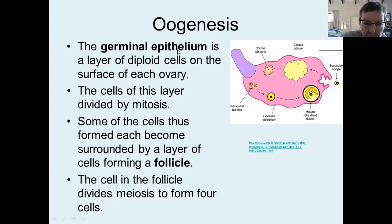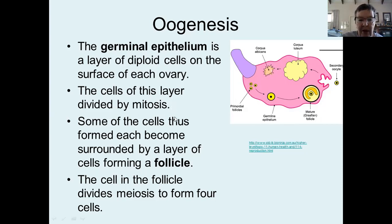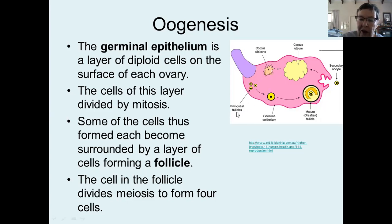Don't call it germline — I'm happy with you calling it germinal epithelium. Those cells are diploid, and the cells of that layer are able to divide by mitosis. Some of the cells thus formed become surrounded by a layer of cells and they form a little follicle. A follicle is a cell in the center that is going to become the egg cell, surrounded by a layer of cells. These very first stages of follicles are called primordial follicles — you don't have to know that; you can just call them primary follicles.